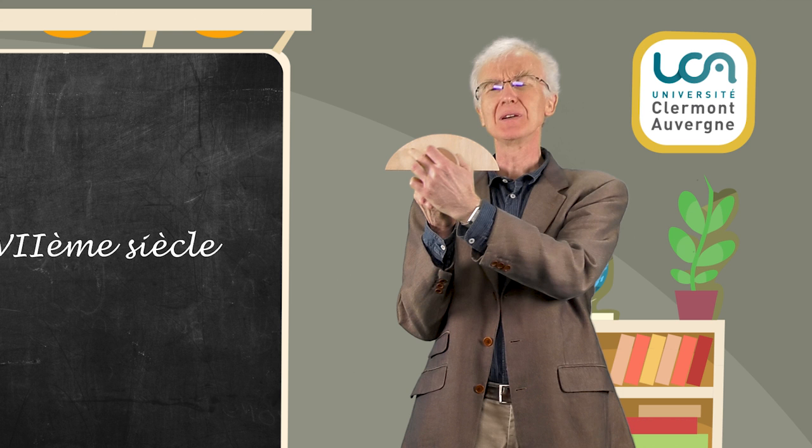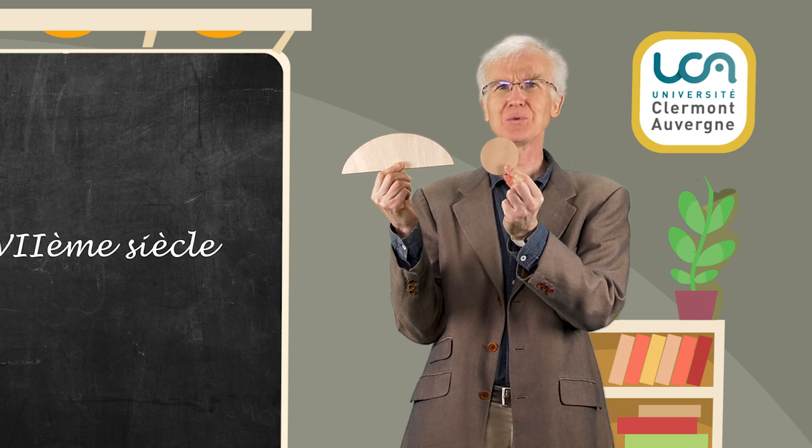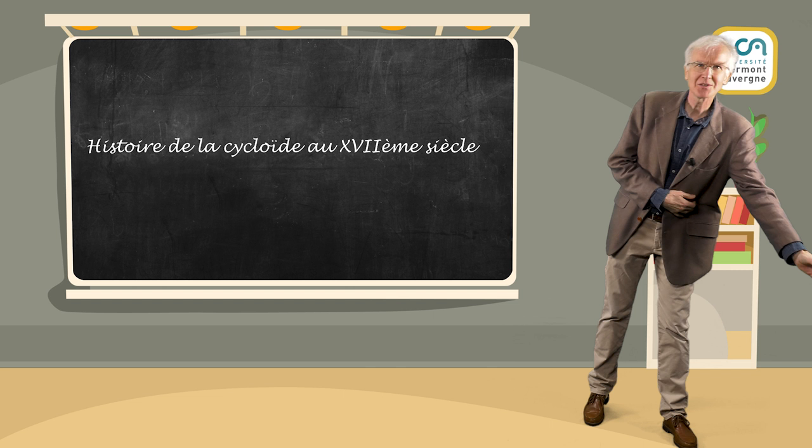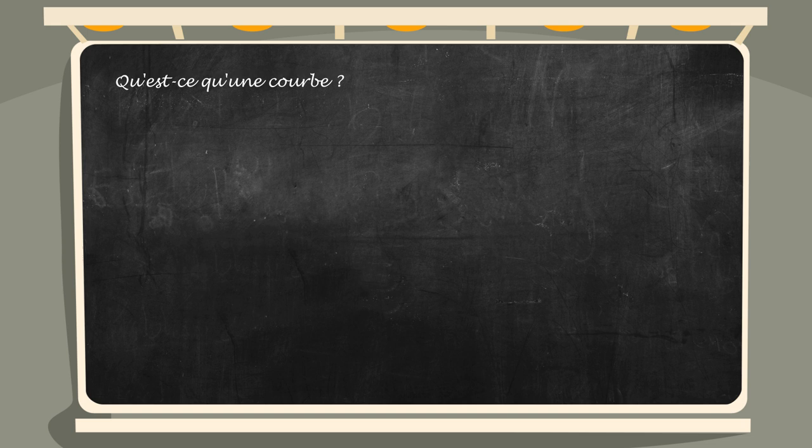Le problème de la quadrature de la cycloïde consiste à déterminer l'aire sous l'arche de la cycloïde en fonction du rayon du disque générateur.